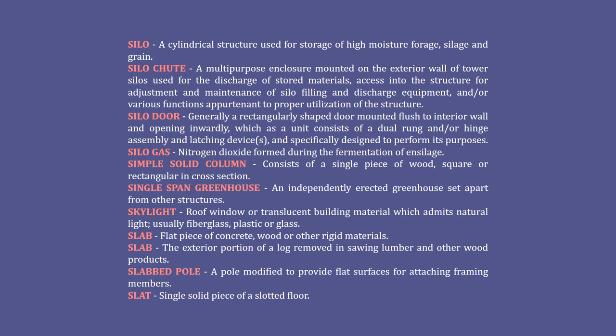Silo door: generally a rectangularly shaped door mounted flush to the interior wall and opening inwardly, which consists of a dual rung and/or hinge assembly and latching devices, specifically designed to perform its purposes. Silo gas: nitrogen dioxide formed during the fermentation of ensilage. Simple solid column: consists of a single piece of wood, square or rectangular in cross section. Single span greenhouse: an independently erected greenhouse set apart from other structures.